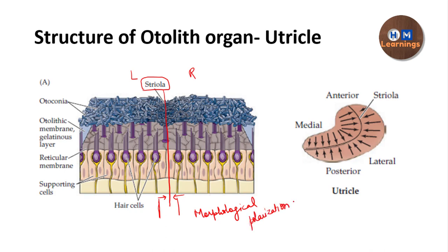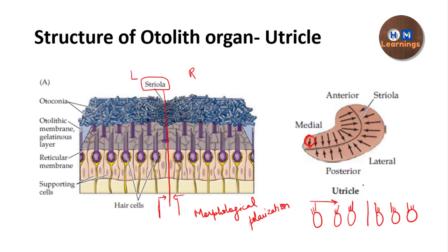This diagram shows the striola dividing the utricle into two regions with opposite polarity. The arrows show the position of the kinocilium. On one side of the striola the kinocilium points towards the striola, and on the other side the kinocilium also points towards the striola, but because the cells are on opposite sides, the direction is reversed. So for one group, the kinocilium faces one way, and for the other group it faces the opposite way.